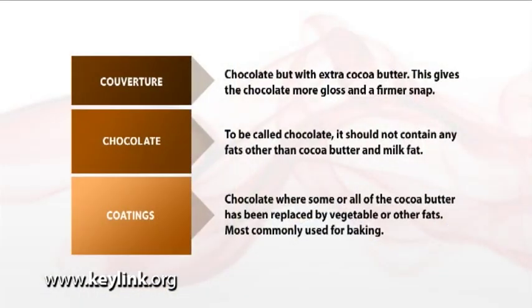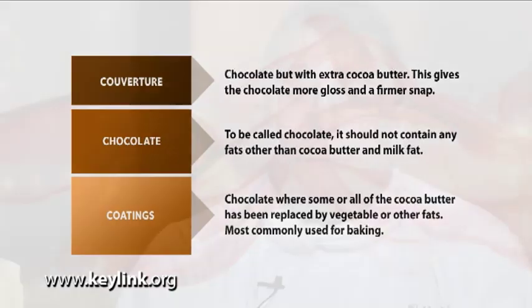At the top end of the range we have chocolates with a high proportion of cocoa butter. These are called couvertures. At the bottom of the range we have coatings. These are products that have had some or all of the cocoa butter replaced by other fats.